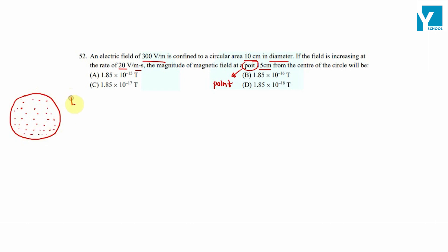The electric field E is given as equal to 300 volt per meter. For this circular region, the diameter is 10 centimeter. The radius R is equal to 5 centimeter which is equal to 5 into 10 raised to minus 2 meter.